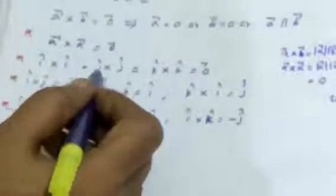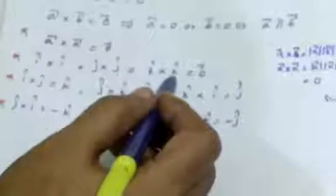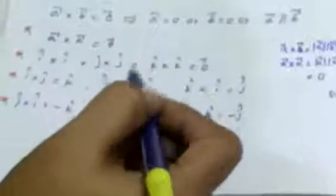Therefore, i cap cross i cap, j cap cross j cap, and k cap cross k cap are all equal to zero.